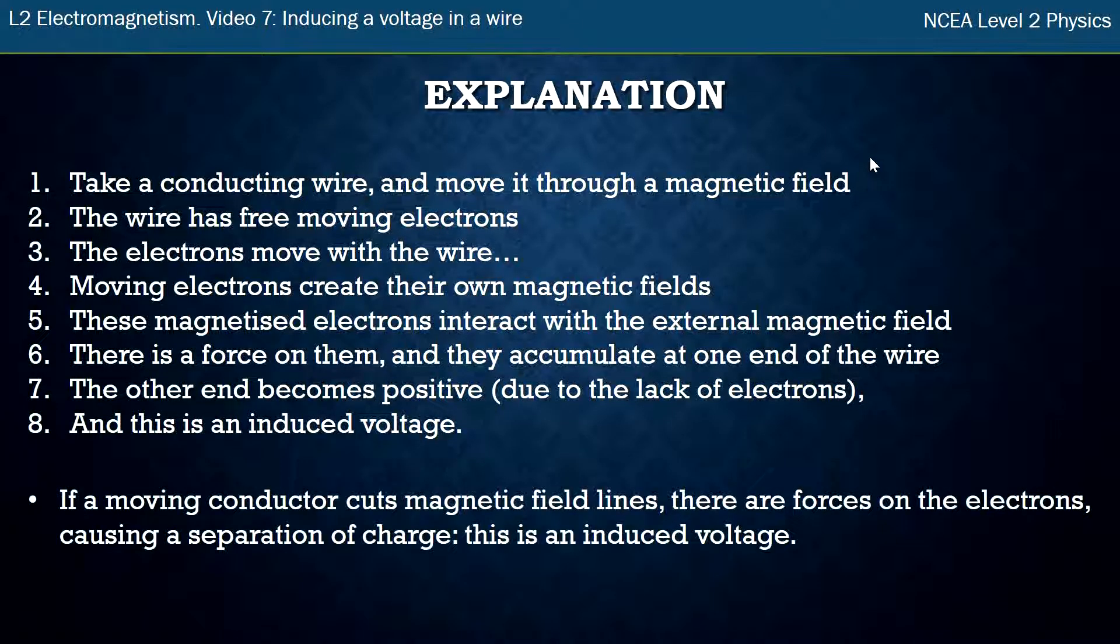So here's a more summarized version that includes all of this. So one really easy sentence: If a moving conductor cuts magnetic field lines, there are forces on the electrons. This causes a separation of charge, and this is an induced voltage.